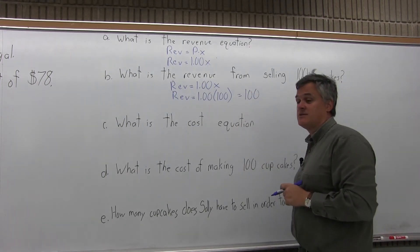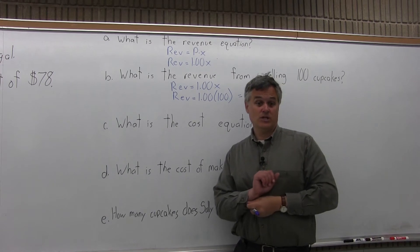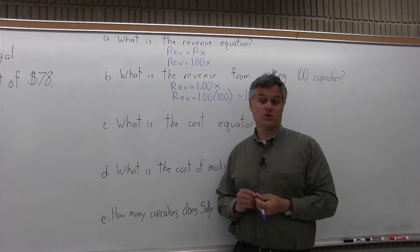And that makes sense. If Sally sells the cupcakes at a dollar each and she sells 100 of them, she has $100 of revenue.